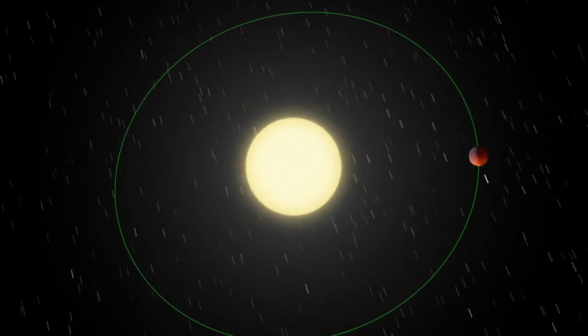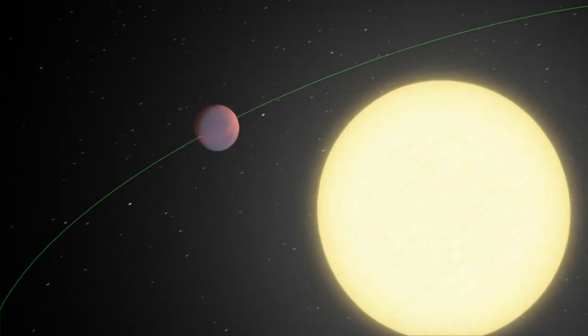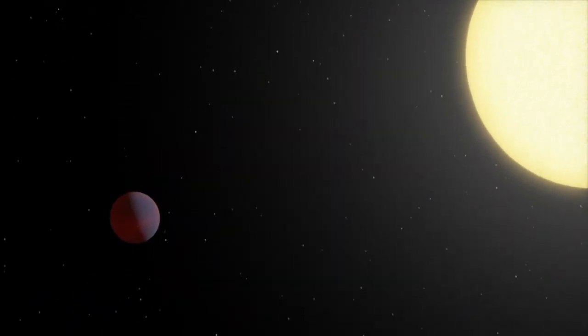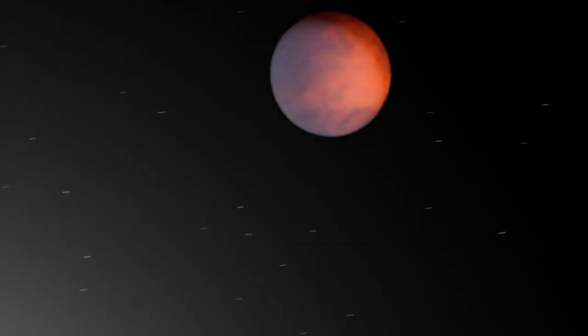This animation shows an unexpected warm spot on the surface of the gaseous exoplanet known as Epsilon Andromeda B. Taking only four and a half days to complete an orbit, this planet is tidally locked to its star, with the same side always facing the heat.